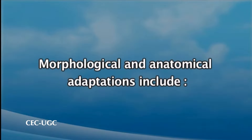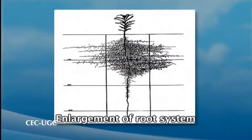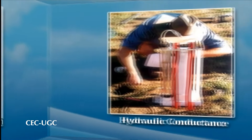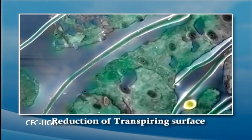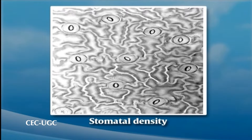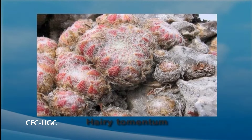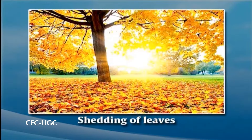Plants adapt to water stress morphologically, anatomically and physiologically. The morphological and anatomical adaptations mainly include enlargement of the root system, improvement of hydraulic conductance and water transport system, reduction of transpiring surfaces, increase in stomatal density, production of hairy tomentum, and apoptosis of assimilation organs, meaning shedding of leaves at the beginning of a drought period.